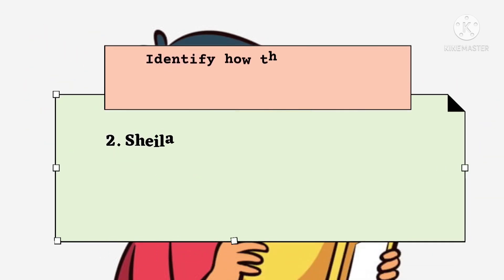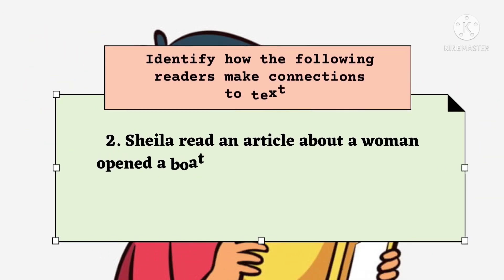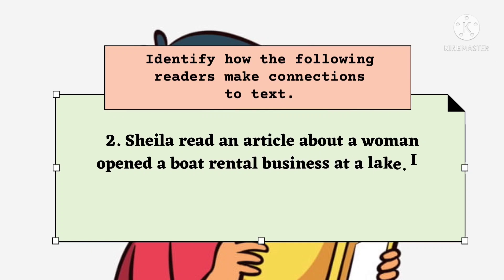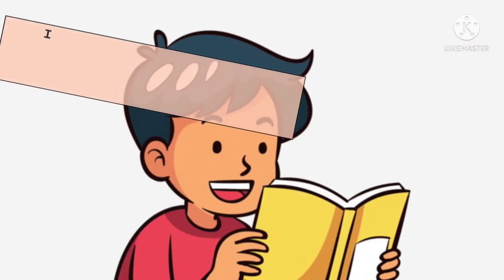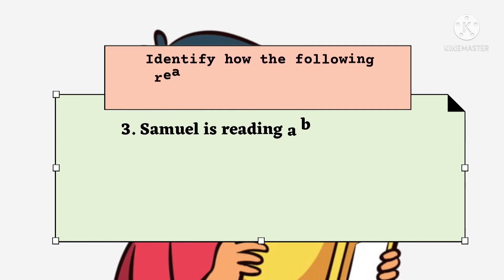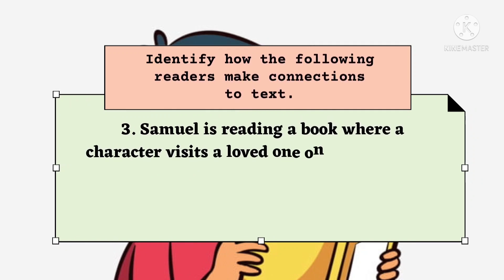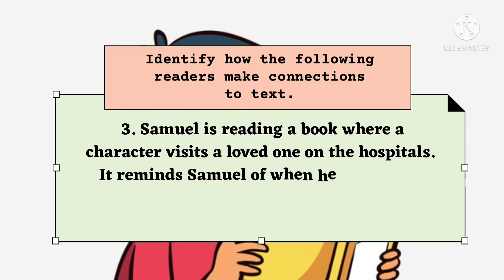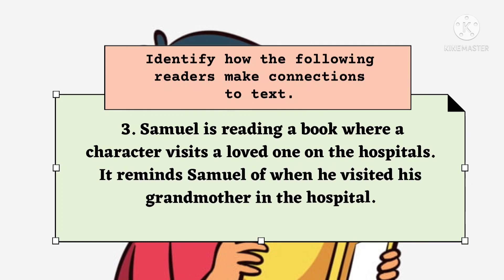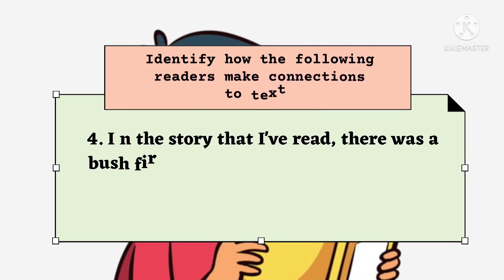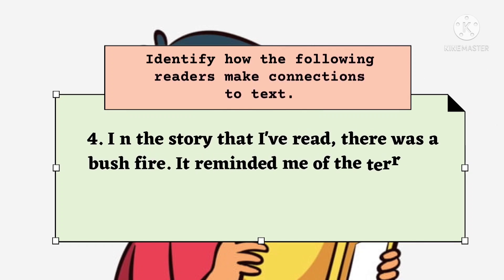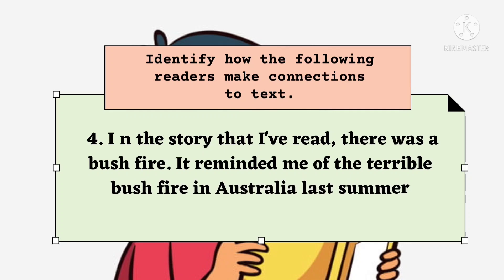Number 2: Sheila read an article about a woman who opened a boat rental business at a lake. It reminded her of her tour in Laguna Lake. For number 3: Samuel is reading a book where a character visits a loved one in the hospital. It reminds Samuel of when he visited his grandmother in the hospital. Then, for number 4: In the story that I've read, there was a bushfire. It reminded me of the terrible bushfire in Australia last summer.